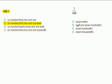Seven over a hundred. We know it's seven, and we know it's hundredths. So we need to find the one that says seven hundredths. It's right here.